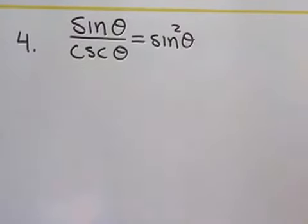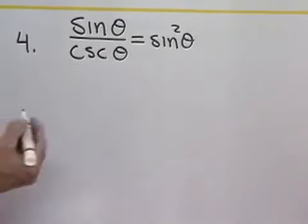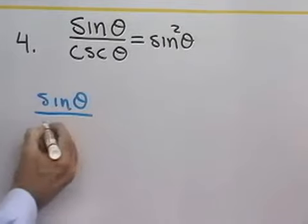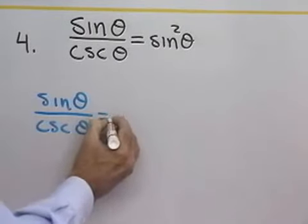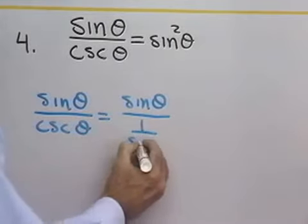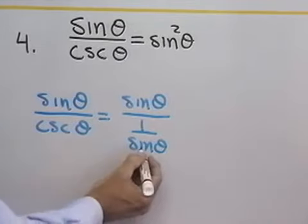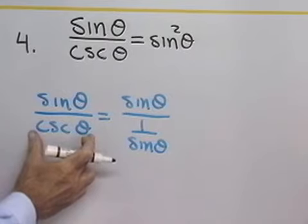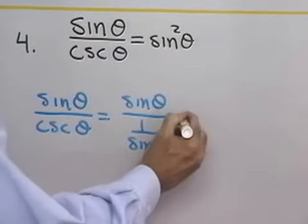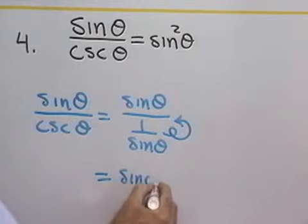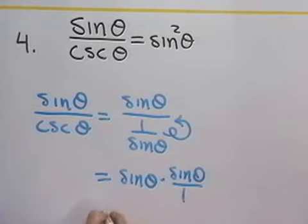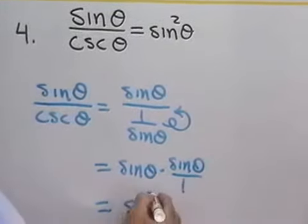Let's try another one: sine theta divided by cosecant theta equals sine squared theta. Starting with the left side, sine theta divided by cosecant theta equals sine theta divided by 1 over sine theta, because cosecant and sine are reciprocals. Using a reciprocal identity, I rewrite cosecant theta as 1 over sine theta. To divide by 1 over sine theta, I multiply by its reciprocal, sine theta, giving me sine theta times sine theta over 1.